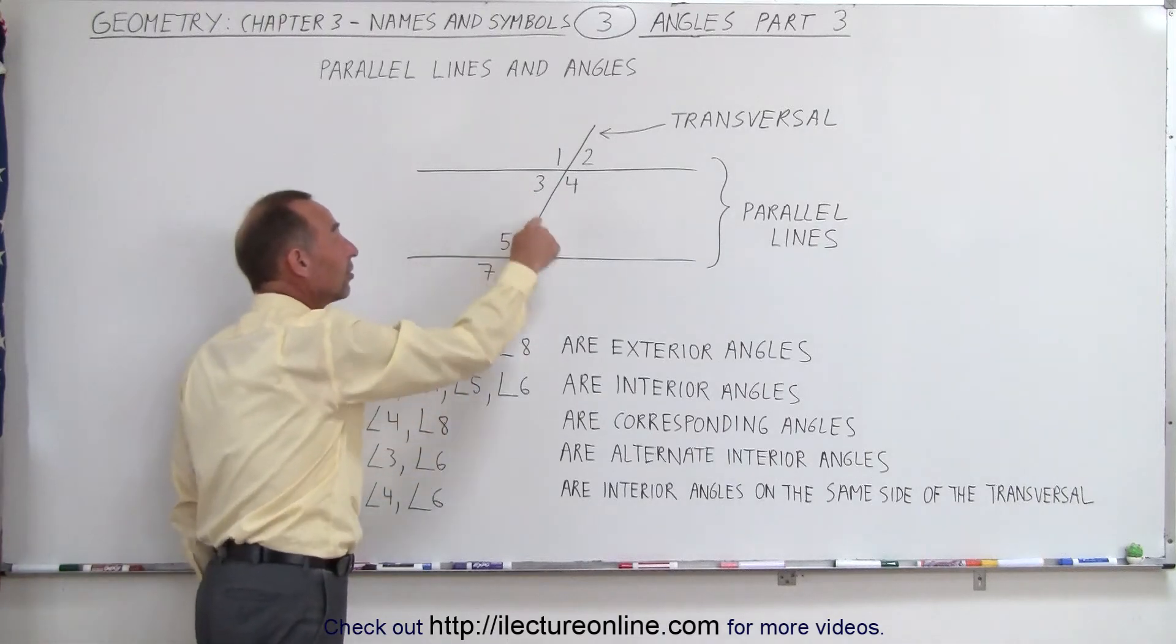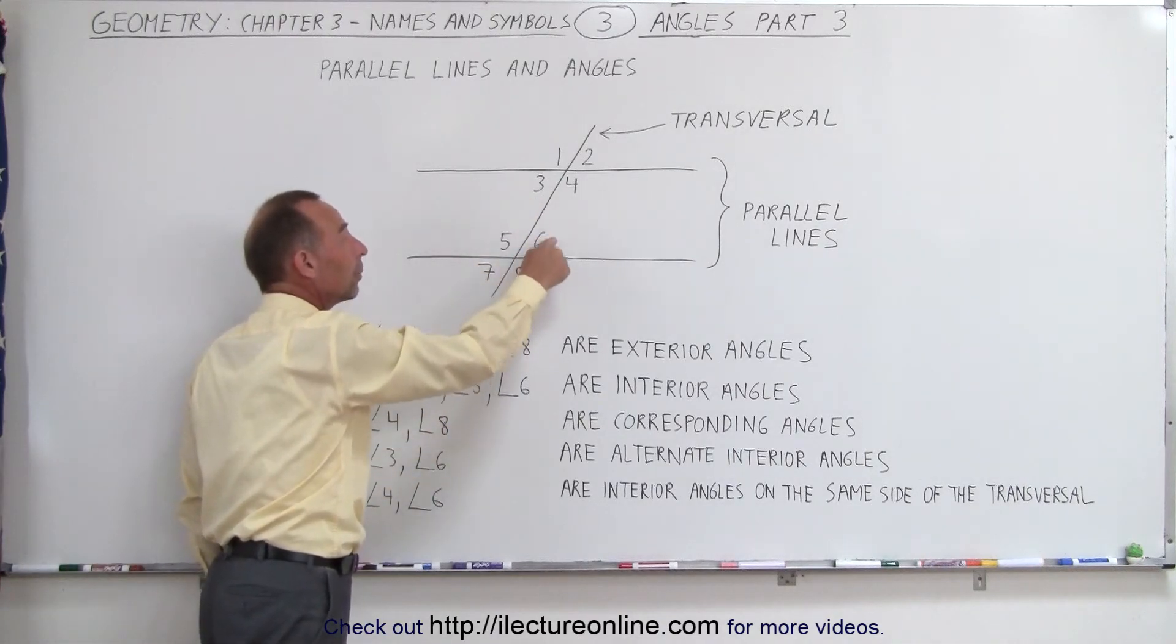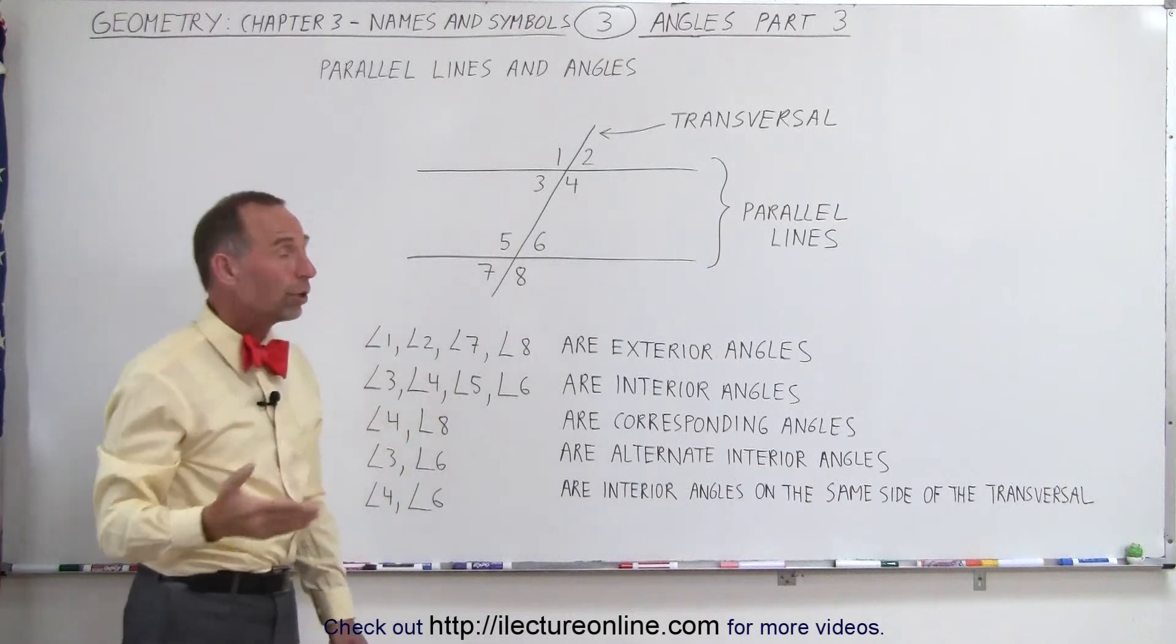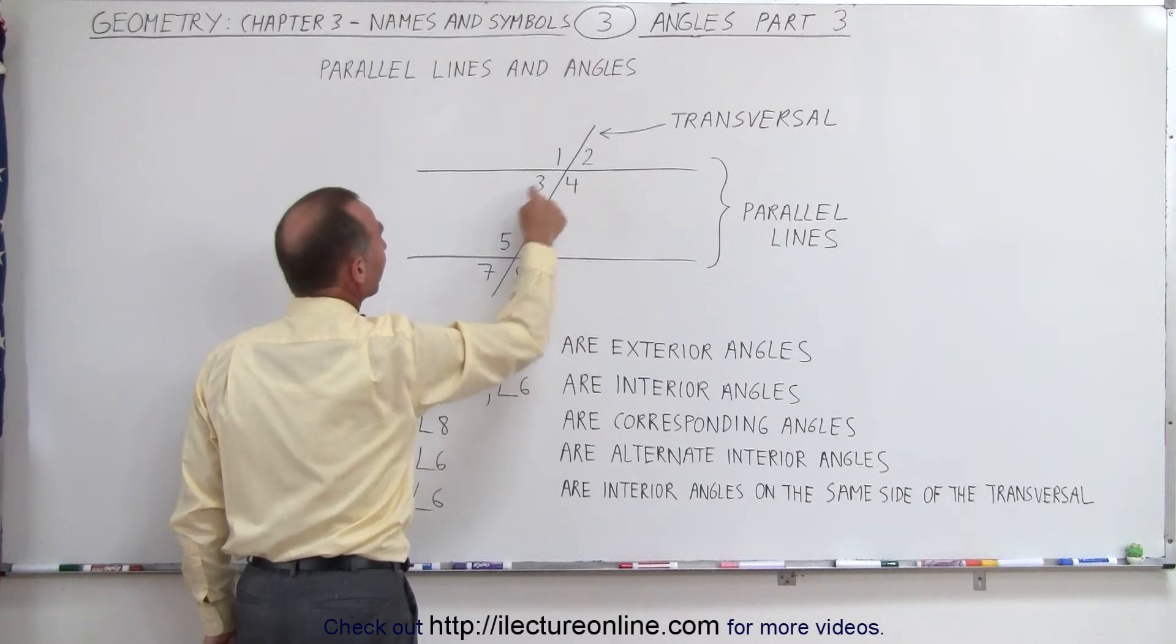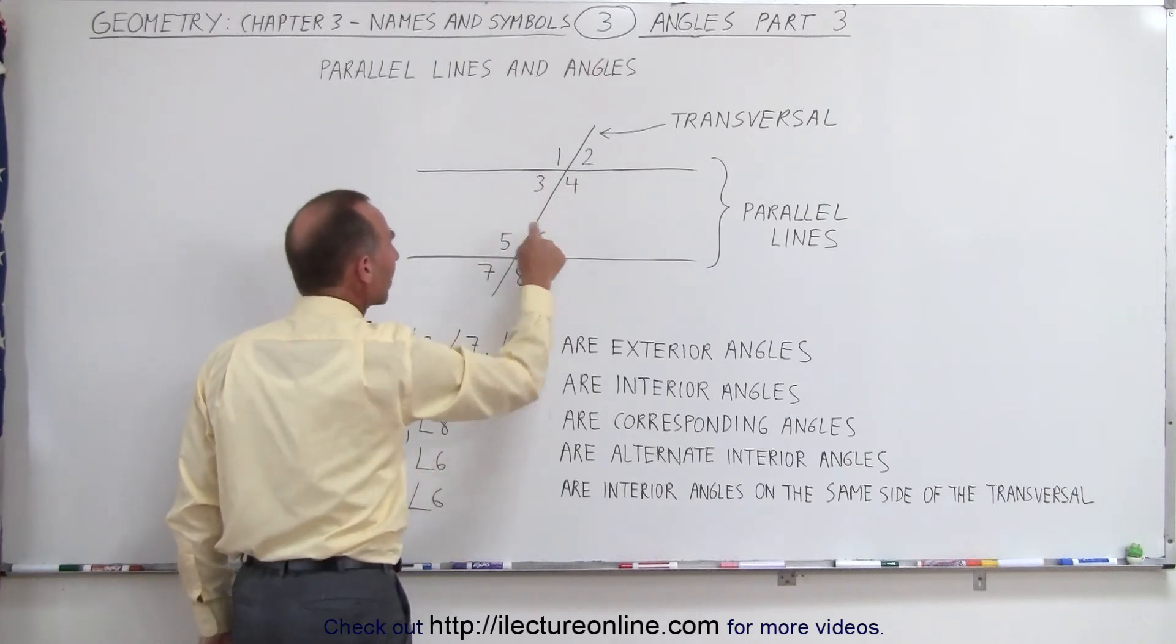Now since three and six are alternate interior angles, what about four and five? Sure enough, four and five are also alternate interior angles. And again, four and five have the same angular measure. Three and six have the same angular measure.